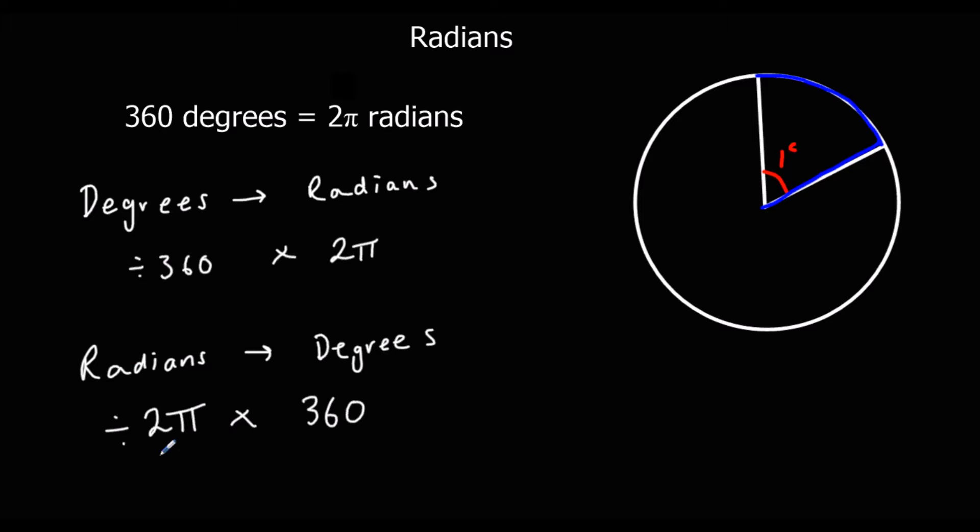And it's the other way around from radians to degrees. I would divide by two pi first and times by 360. So divide by what it's out of, times by what I want it to be out of.